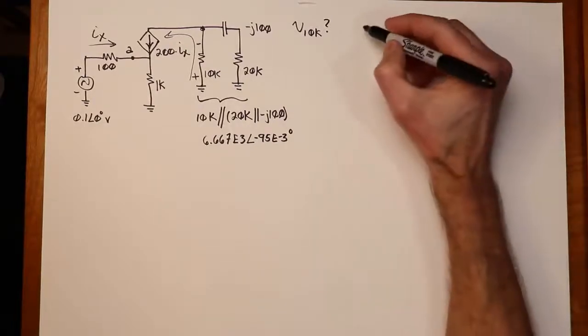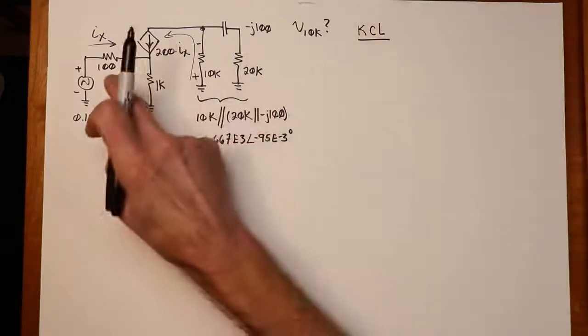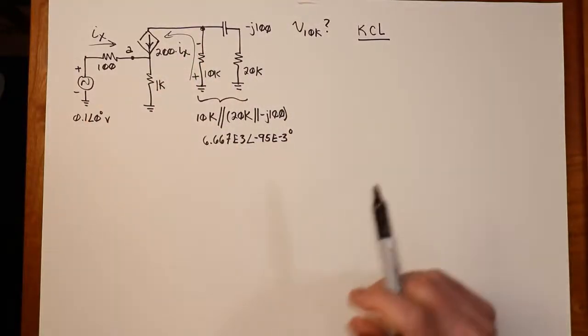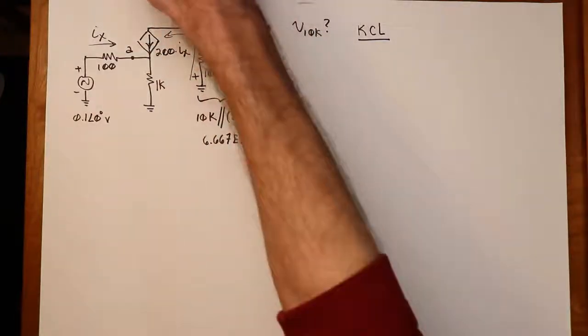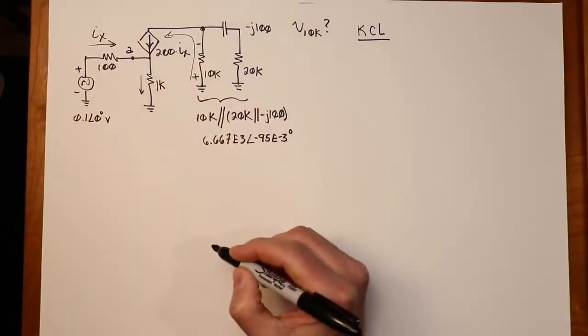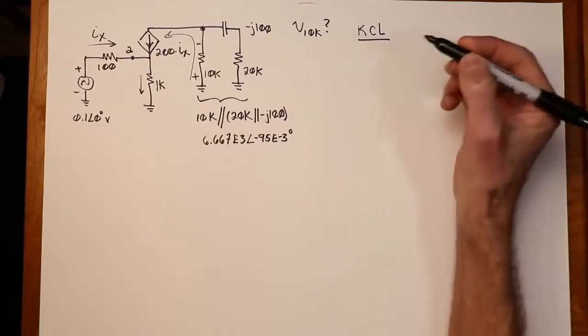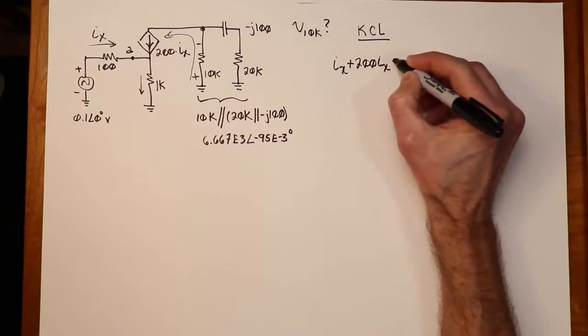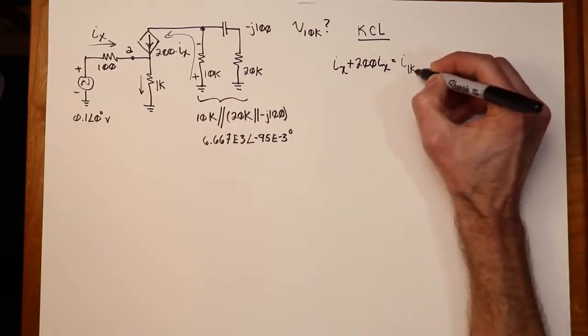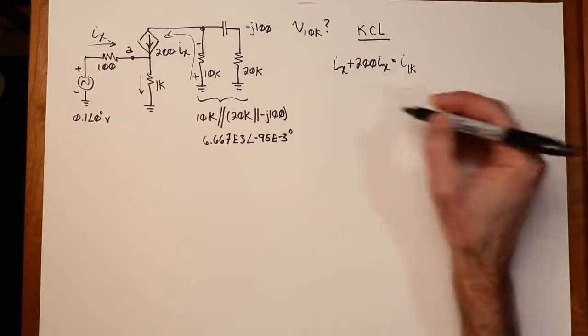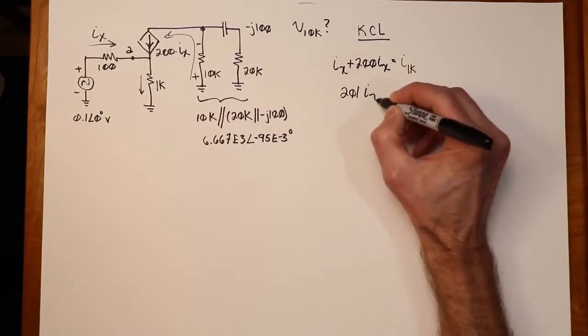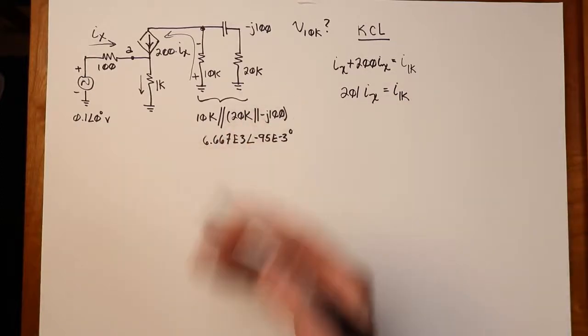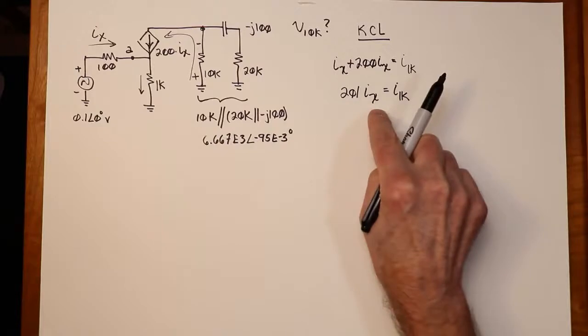Turn our attention back over to here. What we're going to do is what we would typically do in a KCL. So if you're thinking, I've got two nodes, let's do a nodal analysis, you can do that, but I'm going to show you a technique that's just a little bit quicker. Looking at this, we have an ix coming in and a 200 ix coming in, and those two things are going to combine and produce the current down through the 1k. So we can say what comes in has to equal what goes out. So what comes in is ix and 200 ix, and what comes out is the current through the 1k ohm. So first step here, we can just combine this up and say, this is 201 times ix has to equal i of 1k.